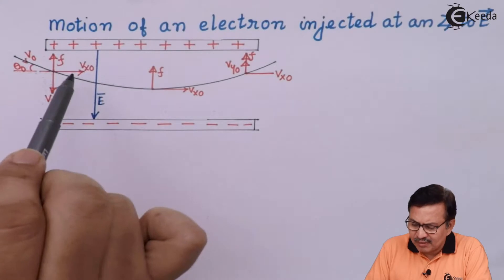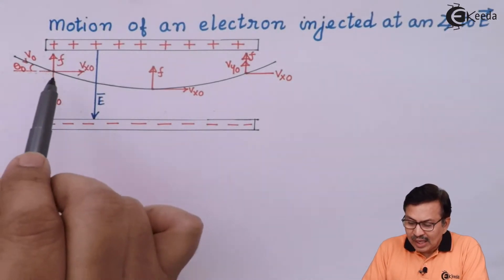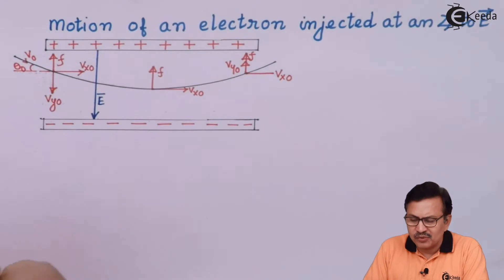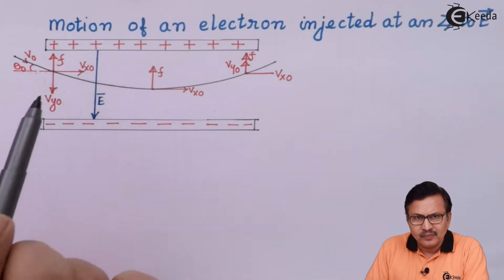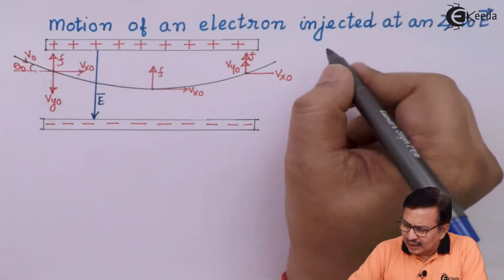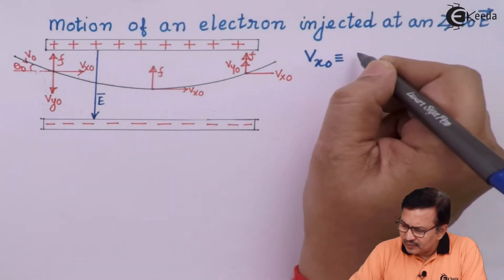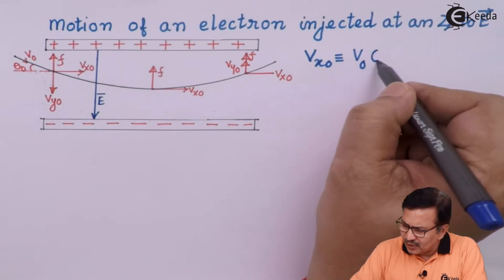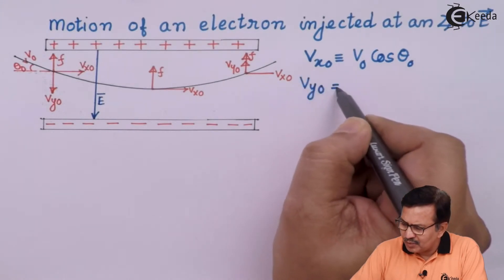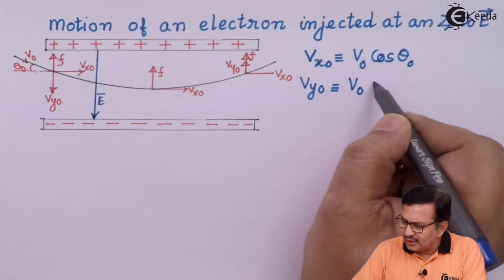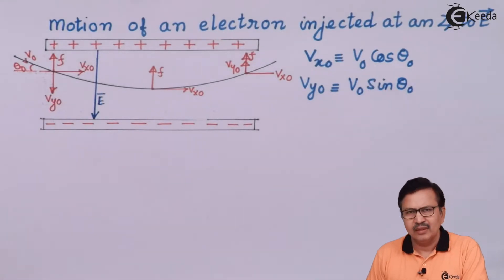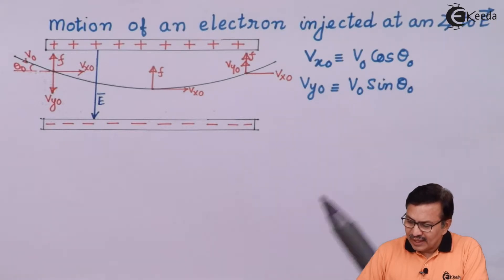When the electron enters the electric field, we have the velocity component vx0 making an angle theta0, and the y-component vy0 which is perpendicular to vx0. Resolving this velocity into two components: vx0 is equal to v0 cos(theta0), and the initial y-component vy0 is equal to v0 sin(theta0).